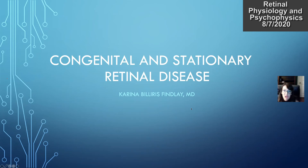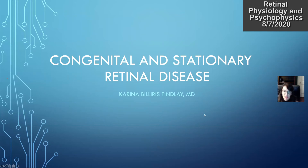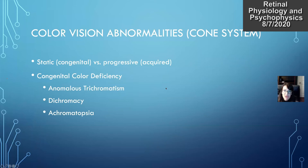The next lecture covers congenital and stationary retinal diseases from chapter 12, which is related to chapter three. This will talk about color vision abnormalities and night vision abnormalities. The cone system is responsible for color vision and the rod system for night vision.